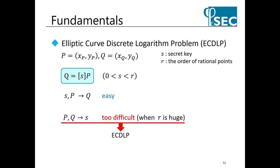I will explain ECDLP mentioned in the research background. When s times the rational point P is Q, it is known that finding Q from s and P is easy. But finding s from Q and P is difficult in most cases. This is called ECDLP. The rho method finds s from rational points P and Q.